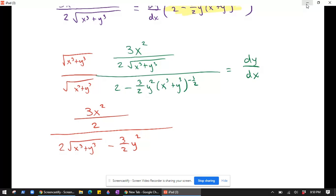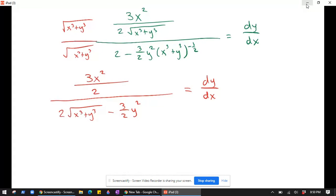So this is fine. I think any of these representations is fine at this point. I guess you could times everything through by 2, maybe the top and the bottom by 2. All right, so if you times the top and the bottom by 2, you end up with 3x squared over 4 square root of x cubed plus y cubed minus 3y squared. This is about as clean as you might want to get it.